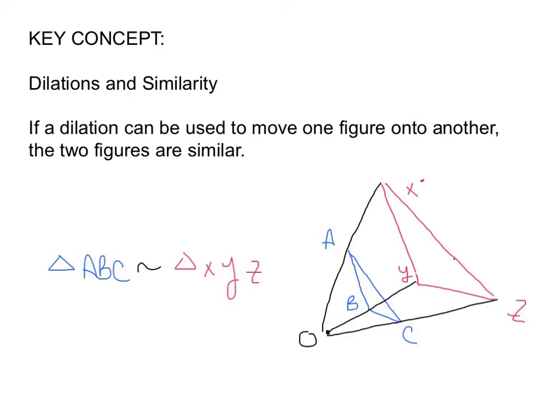Our first key concept, dilations and similarity. If a dilation can be used to move one figure onto another, the two figures are similar. So if you look here, I have figure ABC, and I dilated it, starting out from point zero up to XYZ. ABC and XYZ are similar. That means the angles are congruent, the sides are proportional. We have the pre-image and the image.